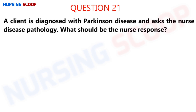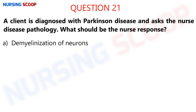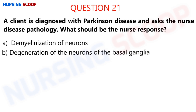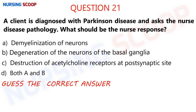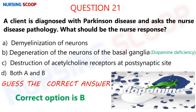Question number 21: A client is diagnosed with Parkinson's disease and asks the nurse about disease pathology. What should be the nurse's response? Option A is demyelination of neurons. Option B is degeneration of neurons of basal ganglia. Option C is destruction of acetylcholine receptors at post-synaptic site. Option D is both A and B. The right answer is option B.